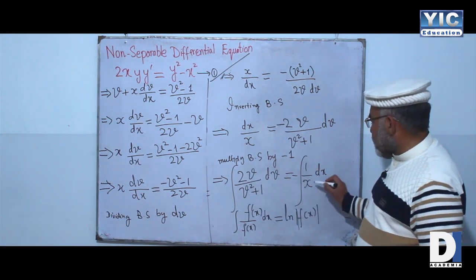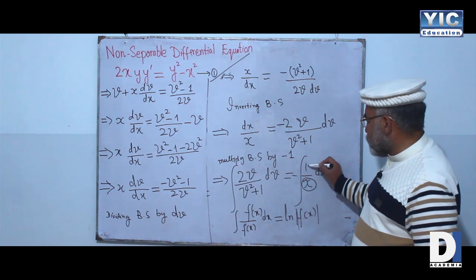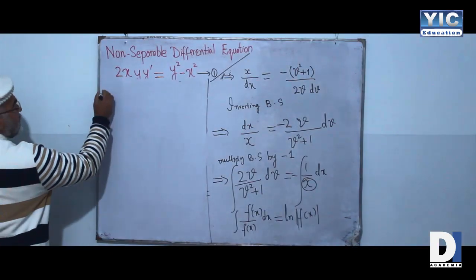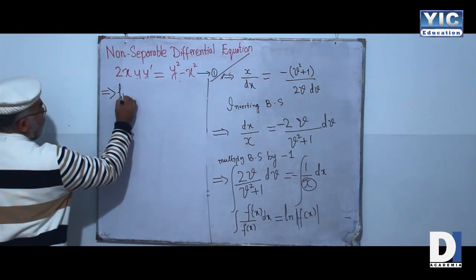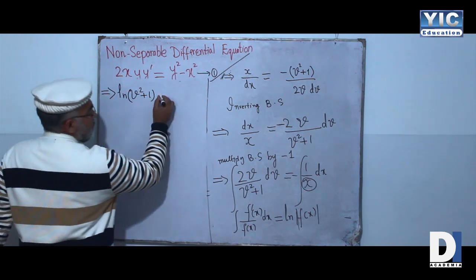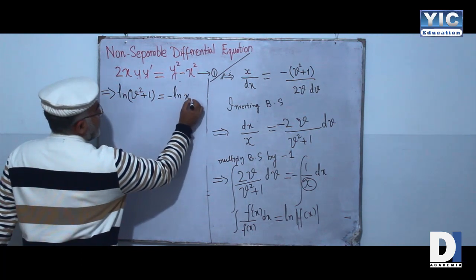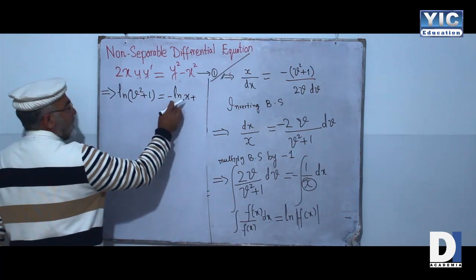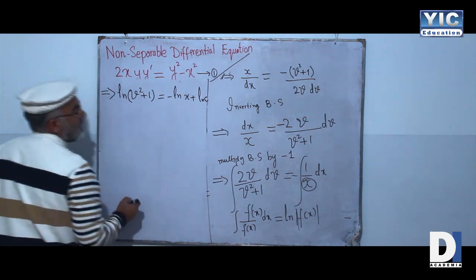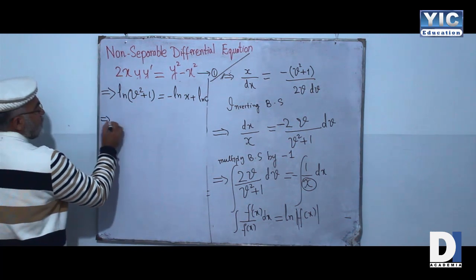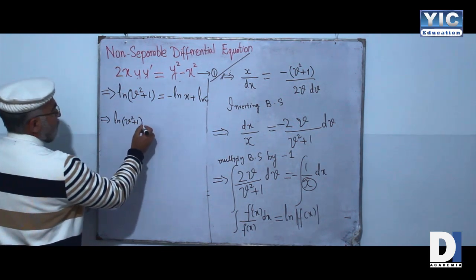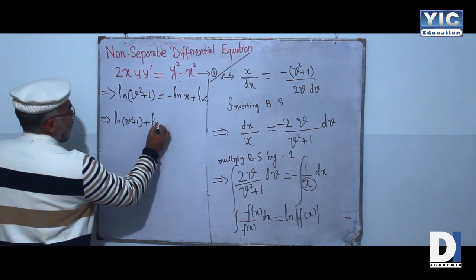Integrating both sides: the left-hand side integral is of the form f'(x)/f(x) dx, which equals ln of the denominator. Here v² + 1 is our function and its differentiation is 2v, so we get ln(v² + 1). On the right, the integral of 1/x is ln(x).